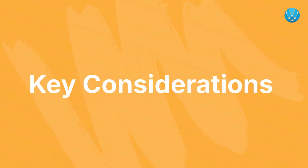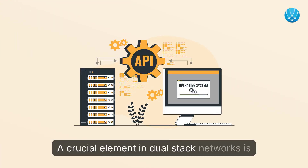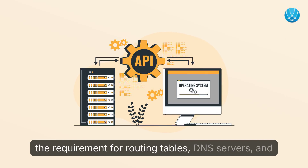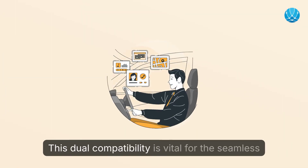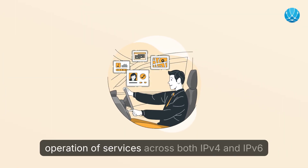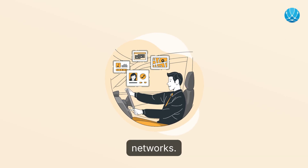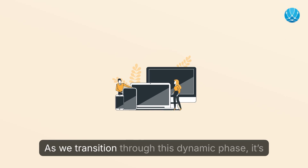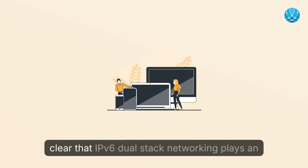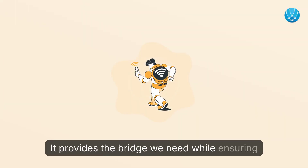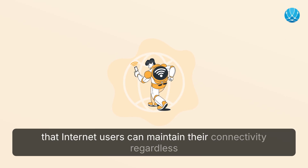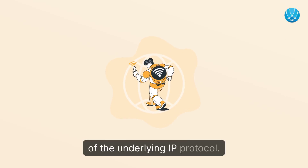A crucial element in Dual Stack networks is the requirement for routing tables, DNS servers, and firewall settings to support both address types. This dual compatibility is vital for the seamless operation of services across both IPv4 and IPv6 networks. As we transition through this dynamic phase, it's clear that IPv6 Dual Stack networking plays an essential role in our connected world, providing the bridge we need while ensuring that internet users can maintain their connectivity regardless of the underlying IP protocol.